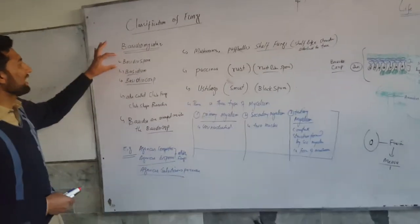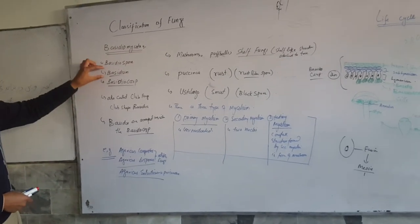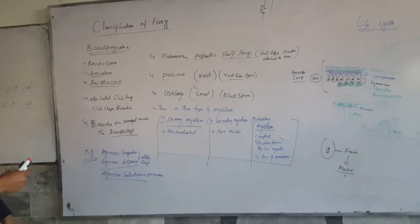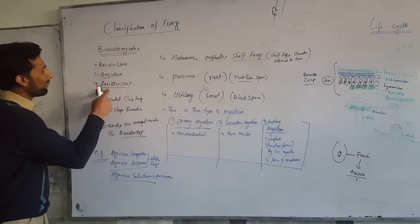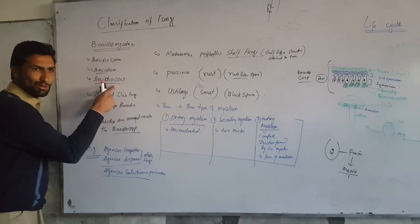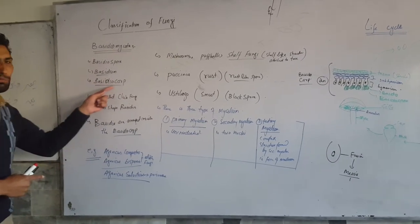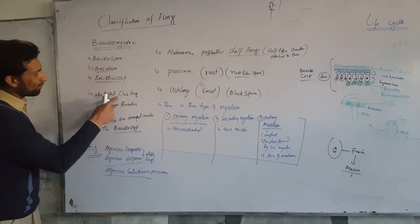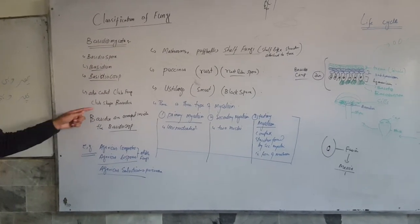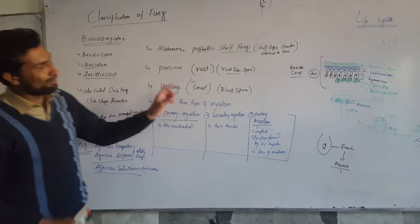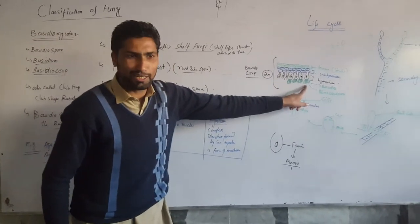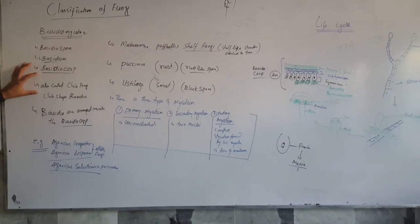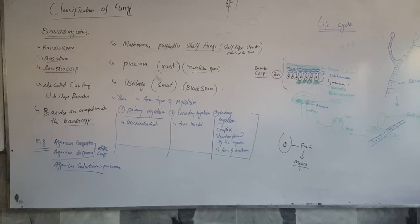Basidiomycota contains basidiospores, and these basidiospores are present in the basidium. The basidium is found inside the basidiocarp. The basidiocarp is the fruiting body in which the basidium is present. It is also known as club fungi because of the club shape of the basidia.